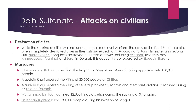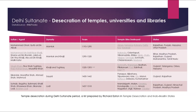Destruction of Cities: While the sacking of cities was not uncommon in medieval warfare, the army of the Delhi Sultanate often completely destroyed cities during military expeditions. According to Jain chronicler Jinaprabhasuri, Nusrat Khan's conquest destroyed hundreds of towns including Ashapalli (modern-day Ahmedabad), Vanasthali, and Surat in Gujarat. Massacres: Ghiyasuddin Balban wiped out the Rajputs of Mewat and Awadh, killing approximately one lakh people. Alauddin Khilji ordered the killing of 30,000 people at Chittor, and ordered the killing of several prominent Brahmin and merchant civilians at Devgiri. Muhammad bin Tughlaq killed 12,000 Hindu ascetics during the sacking of Srirangam. Feroz Shah Tughlaq killed 1,80,000 people during his invasion of Bengal.